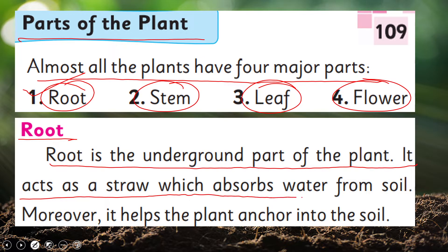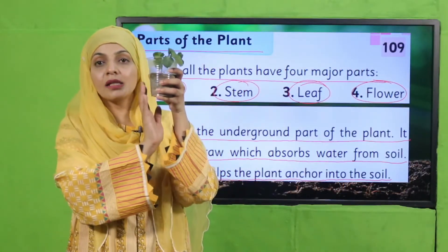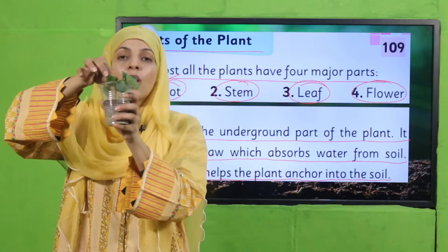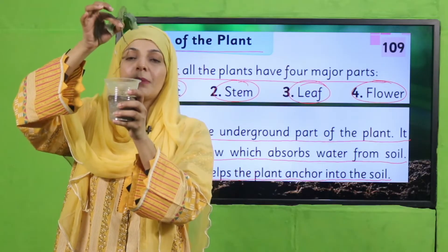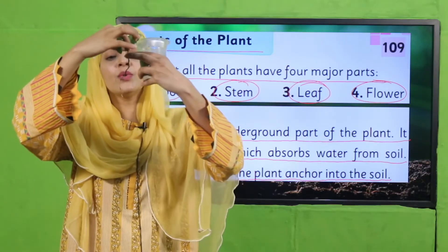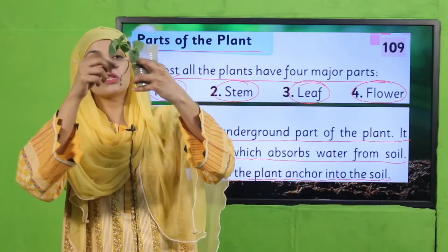Root is the underground part of the plant. It acts as a straw which absorbs water from soil. Moreover, it helps the plant anchor into the soil. Let me show you with a live plant — here you can see a plant aur yeh soil mein laga hua hai. Now I will pull out this plant from the soil.